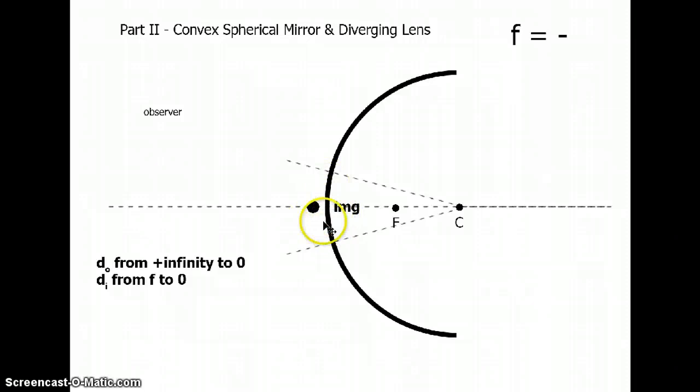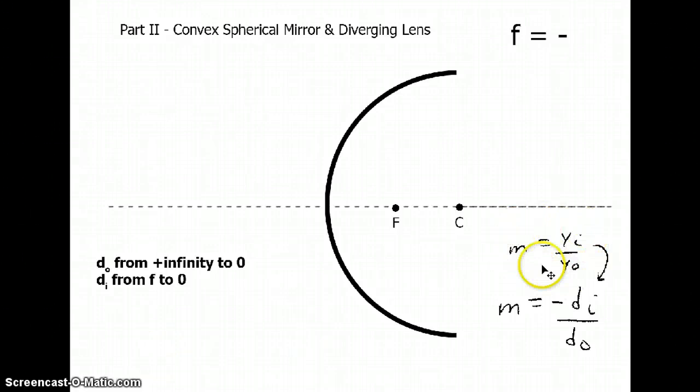I should also mention something about the magnification. The magnification we talked about fundamentally was the definition of the image height and how it relates to the original object height. There's an alternative form that we're going to use: m = -di/do. We can figure out the magnification by using the image and object distances. One of the major conclusions this indicates is that when the image is closer than the object, you're always going to have a smaller number in the numerator and the magnification is always going to be less than one. So that's what happens in this type of mirror.